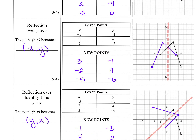Now we're going to look at a reflection over the y-axis. We're going to have a new rule: this time the x values are going to change sign, and the y value is going to stay the same. My points here — negative 3, negative 1 — the negative 3 now became positive and the negative 1 stayed the same. The 2 became negative, the 4 stayed the same. The 5 became negative, the negative 6 stayed the same.